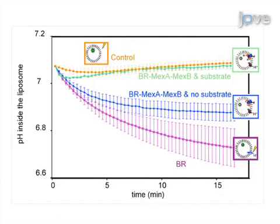Ultimately, proteoliposomes are collected and their fluorescence is used to investigate MEX-AB activity through the change in pH created upon illumination of bacteriorhodopsin.